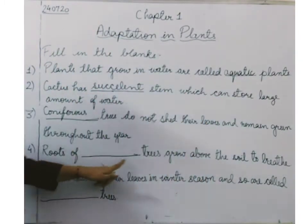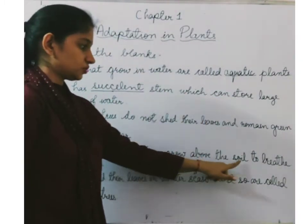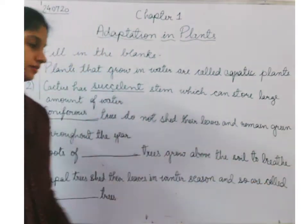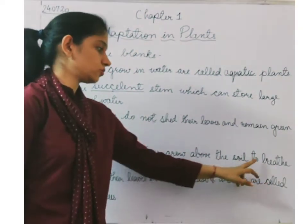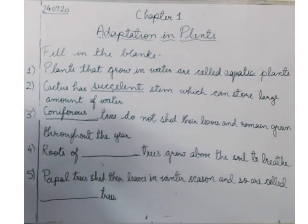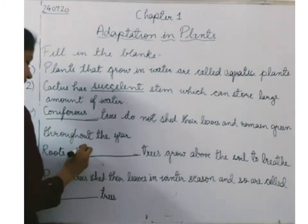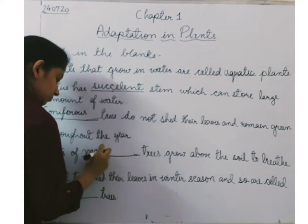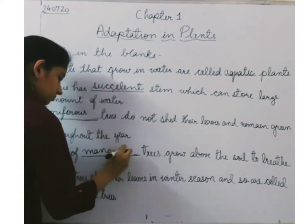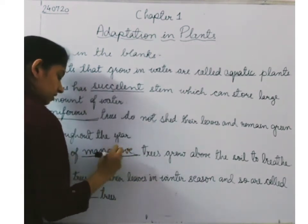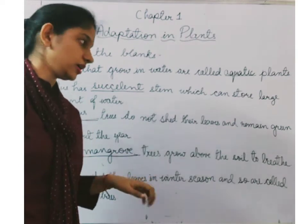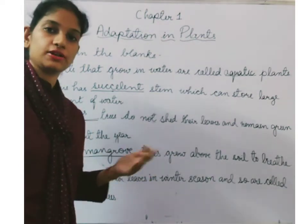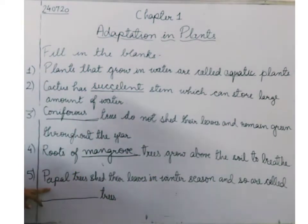Next: roots of dash trees grow above the soil to breathe. Roots of which tree grow above the soil to breathe? The answer is mangrove. Mangrove trees grow in marshes, so the roots cannot breathe because of the clay soil. So they grow above the soil to breathe.